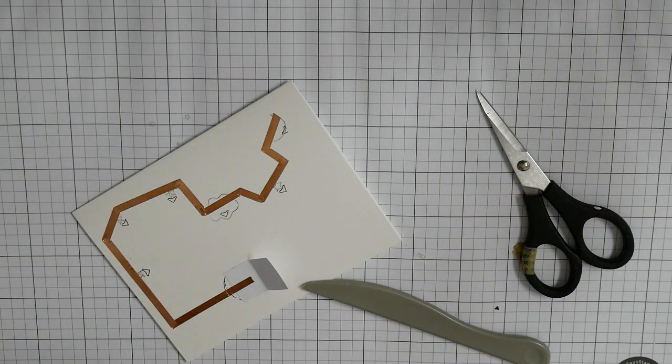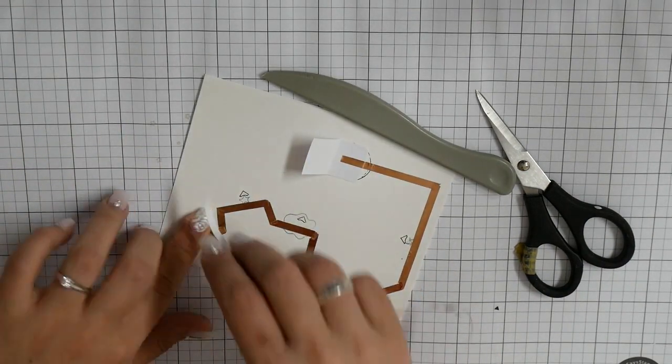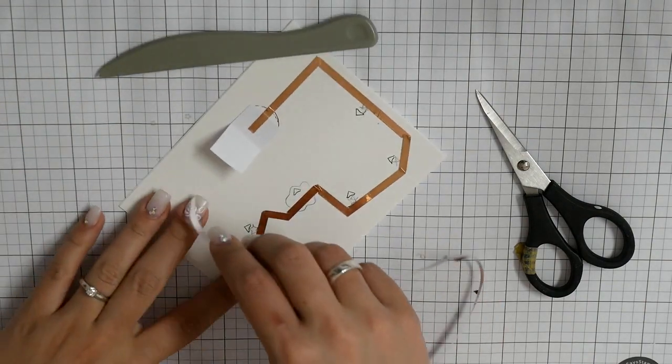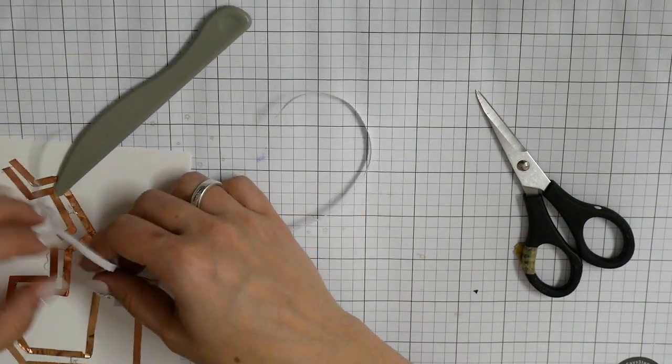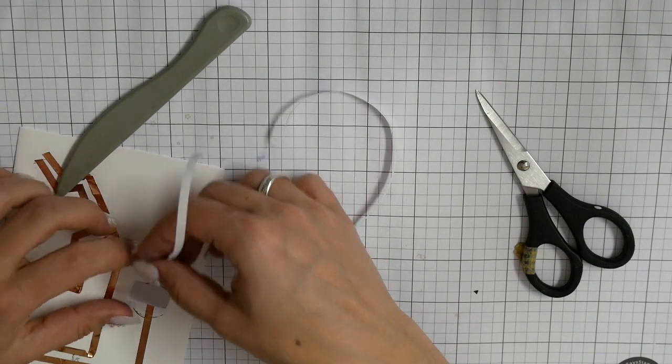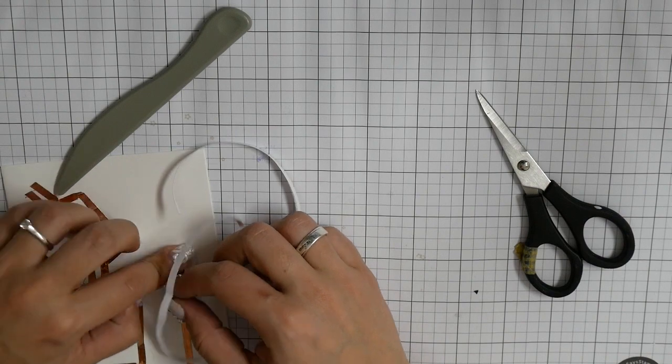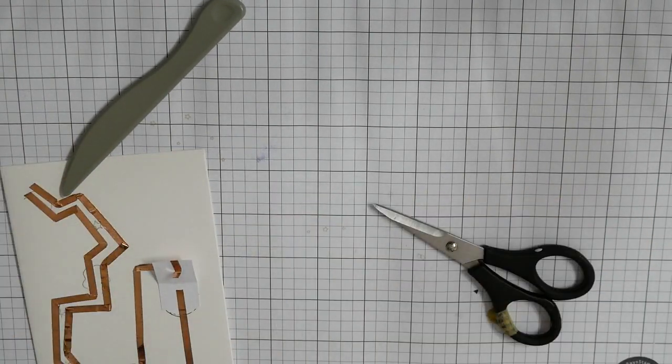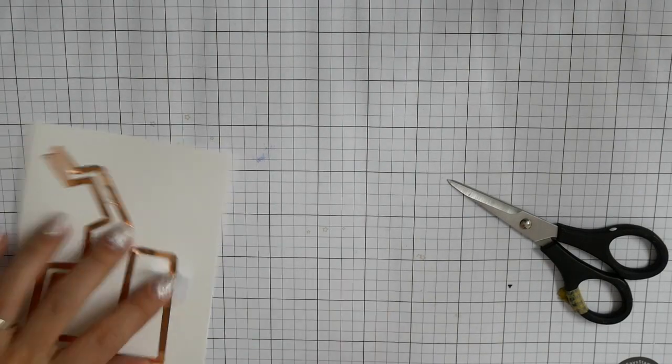So this is our first string, and now the second one. Here I found it really easier to use just my fingers instead of using the bone folder. But later I will use my bone folder to press the copper tape really good to the paper, because if I use only my fingers, it isn't really stuck down to the card base.